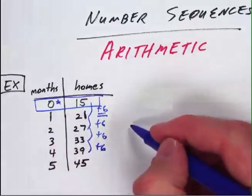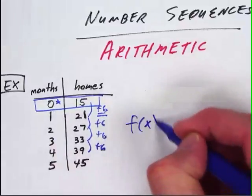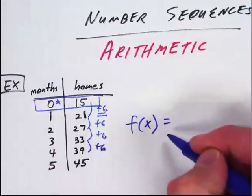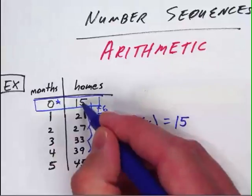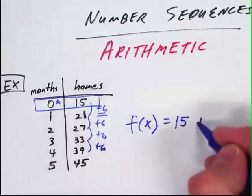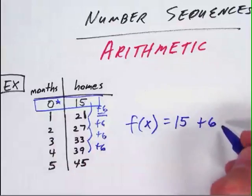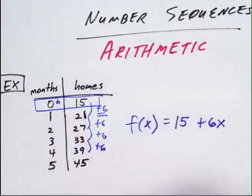Therefore, our equation would simply be f of x, because we're dealing with a function. It has a real life context. It starts at 15, because that's the number of homes they release, and then they add six each month. Well how many months? Well it depends, so we call that x, and we're going to multiply a certain number of months at that point.